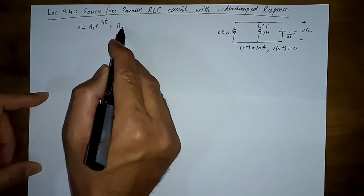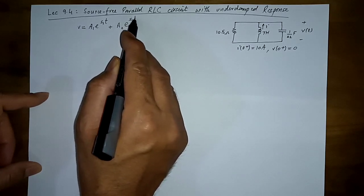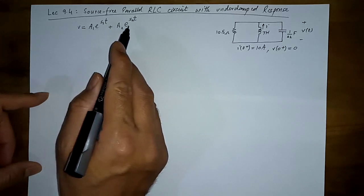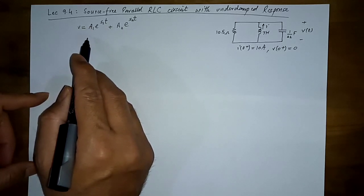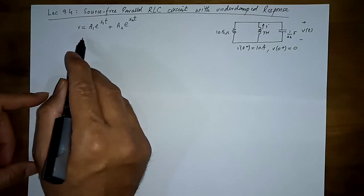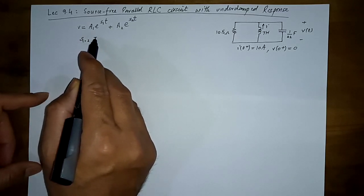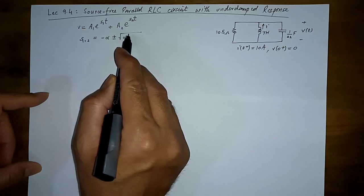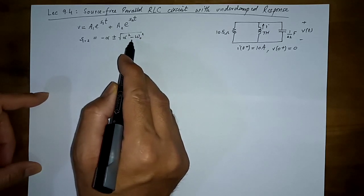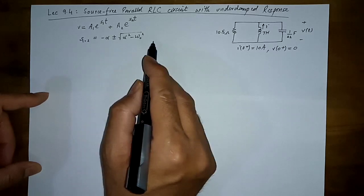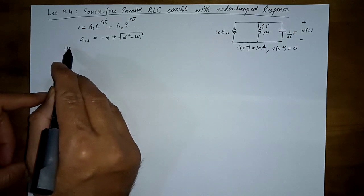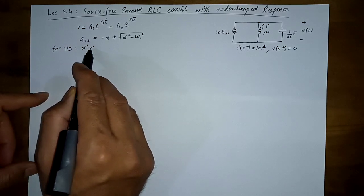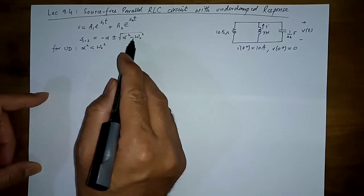Up till now we know that we write the response in a certain way — for example, for an over-damped circuit. For the critically damped case, we don't write it like this because s1 and s2 are equal, so we introduce a t here. For the under-damped case, s1 and s2 are computed as usual, and the condition is when omega-naught squared is greater than alpha squared.